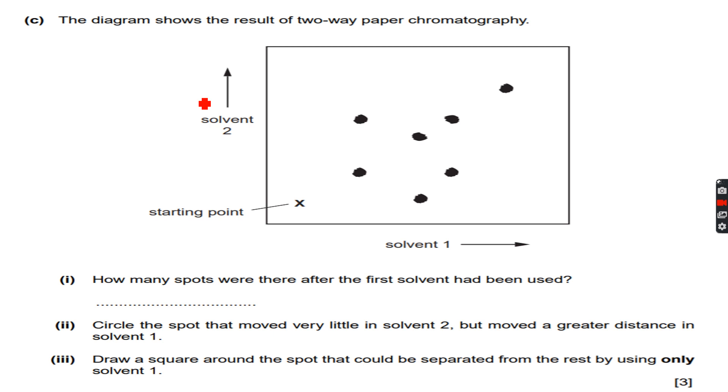We have used solvent 1 and then solvent 2. How many spots were there after the first solvent had been used? When we use solvent 1, we got this spot, this spot, this spot, and this spot. Ignore solvent 2 for a while. You can see that this spot and this spot went to the same length, this spot and this spot went the same length, this spot and this spot went the same length, and this spot went a completely different length.